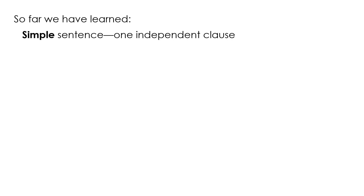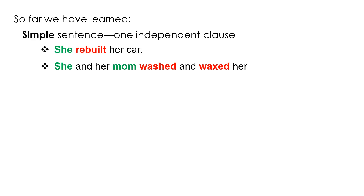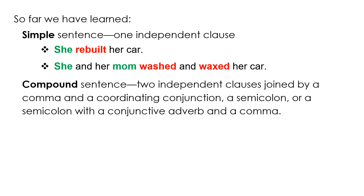So far we have learned: a simple sentence — one independent clause, such as 'She rebuilt her car.' Or 'She and her mom washed and waxed her car' — still a simple sentence, but with a compound subject and a compound verb. A compound sentence has two independent clauses joined by a comma and a coordinating conjunction, a semicolon, or a semicolon with a conjunctive adverb and a comma.